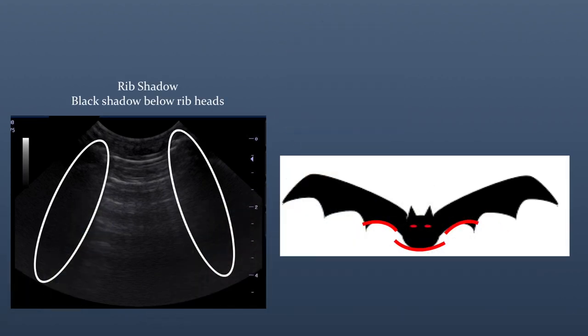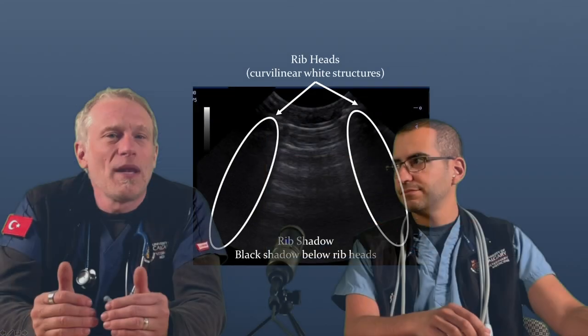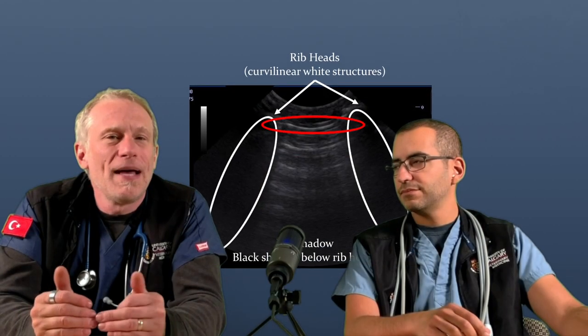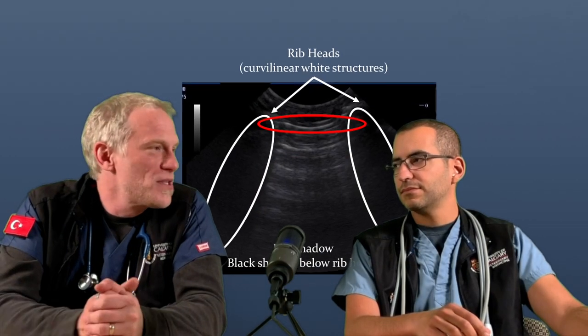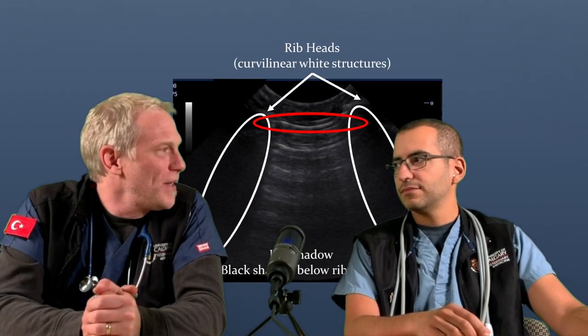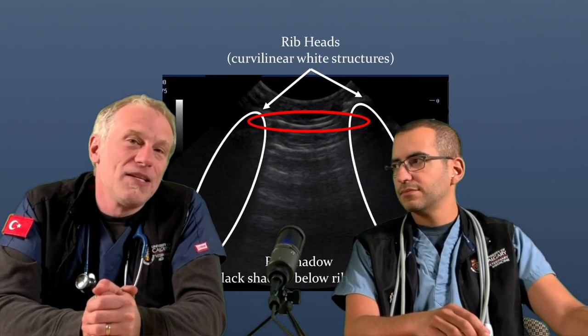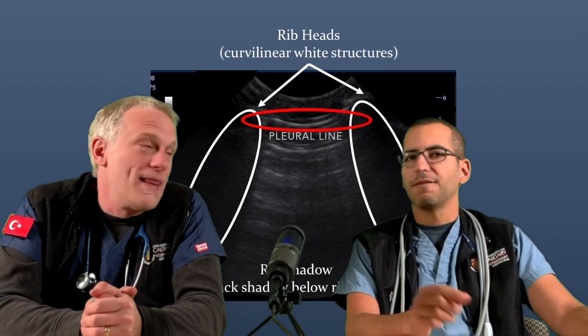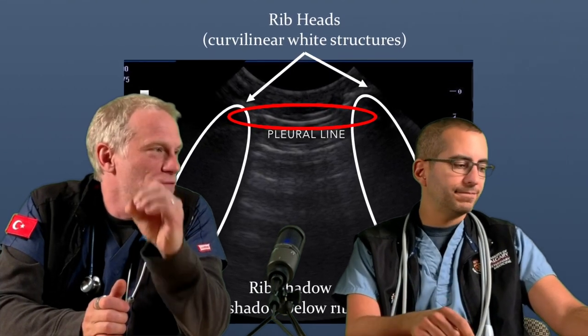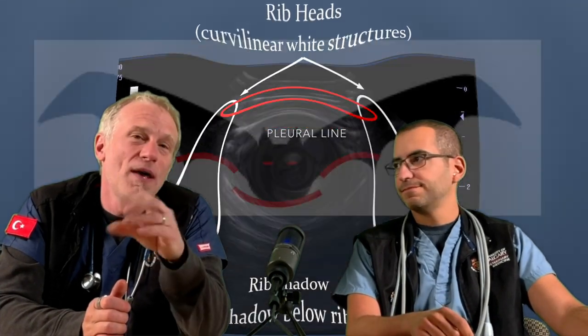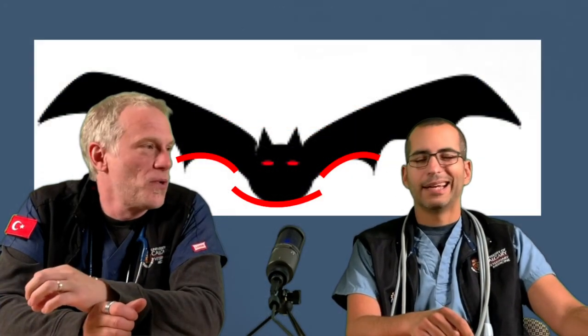So what are we looking for? The first white line below the rib heads, that joins essentially the rib shadowing — that is your pleural line. That's key. You have to find your pleural line. This is why the bat sign or gator sign is important: it orientates you to where that pleural line is going to be.